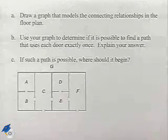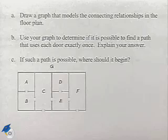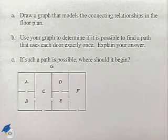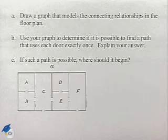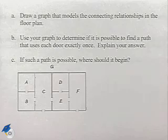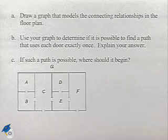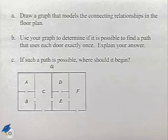Our next problem deals with a floor plan. Draw a graph that models the connecting relationships in the floor plan. Then use the graph to determine if it's possible to find a path that uses each door exactly once and explain. And then if such a path is possible, figure out where it should begin.